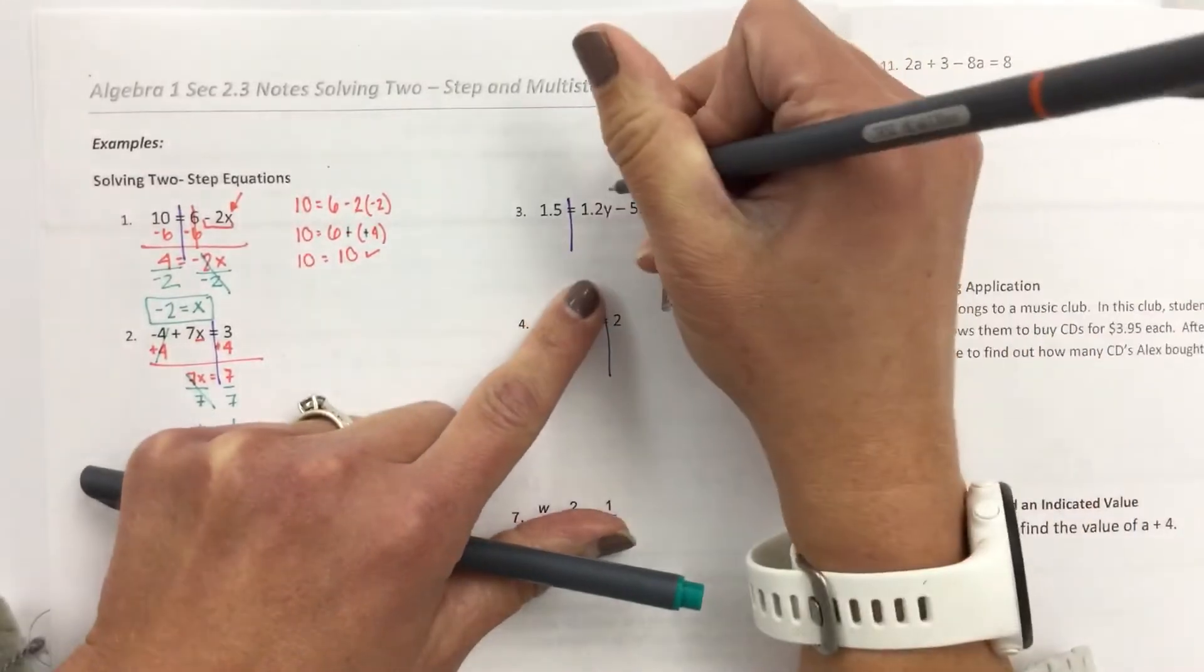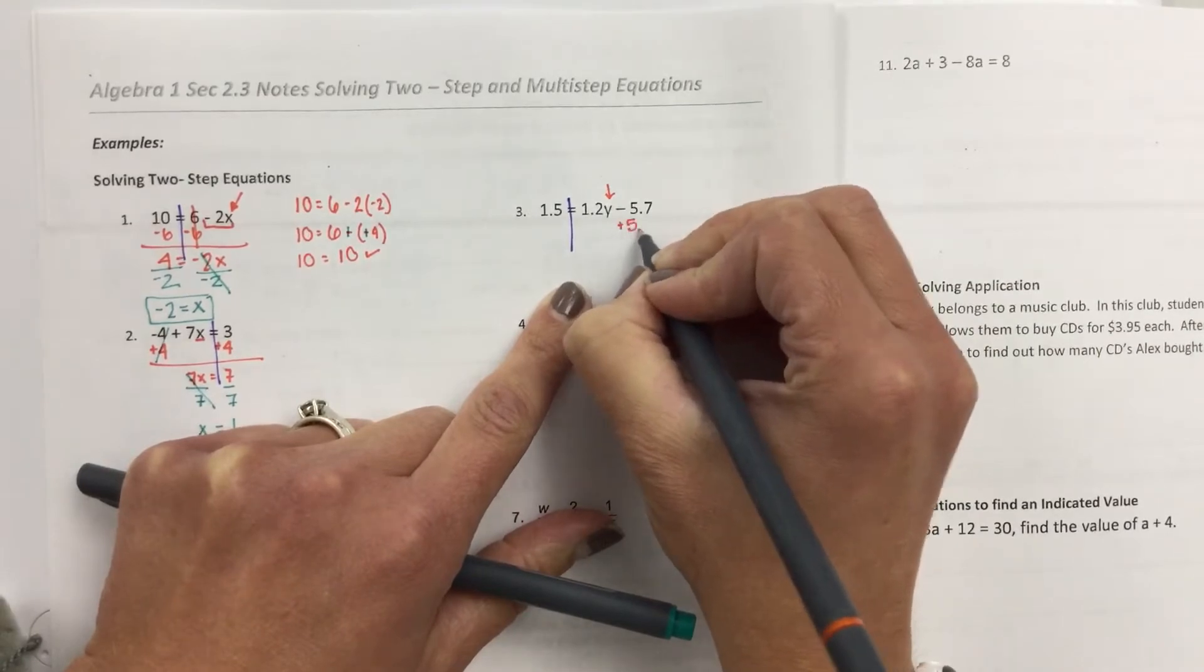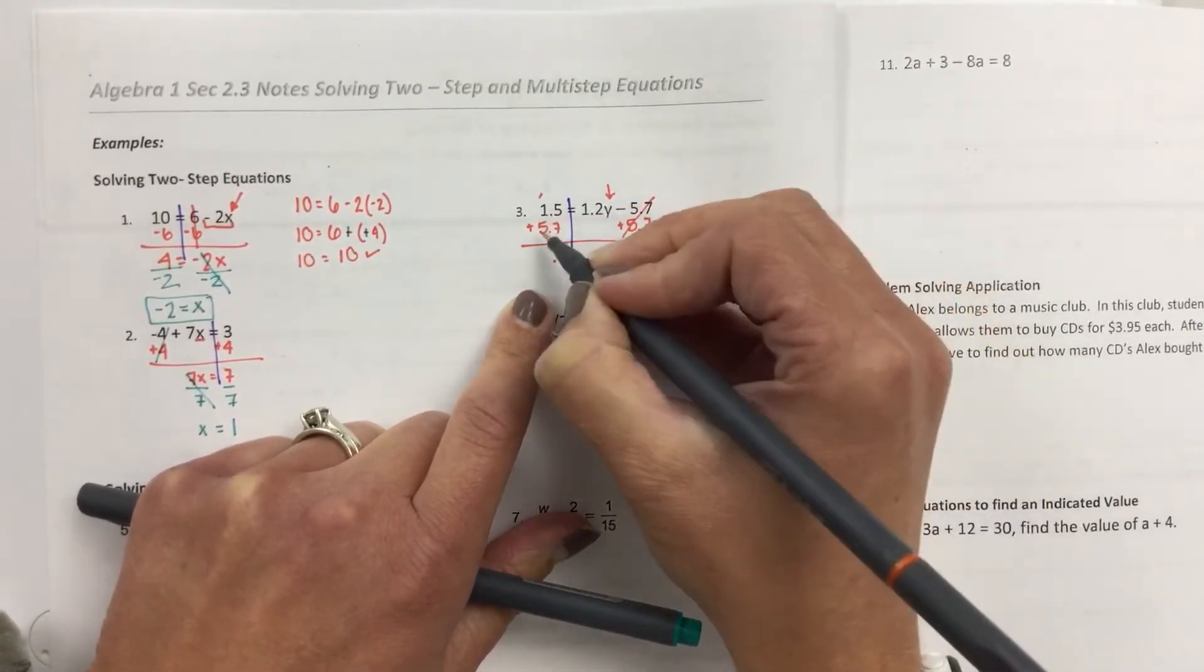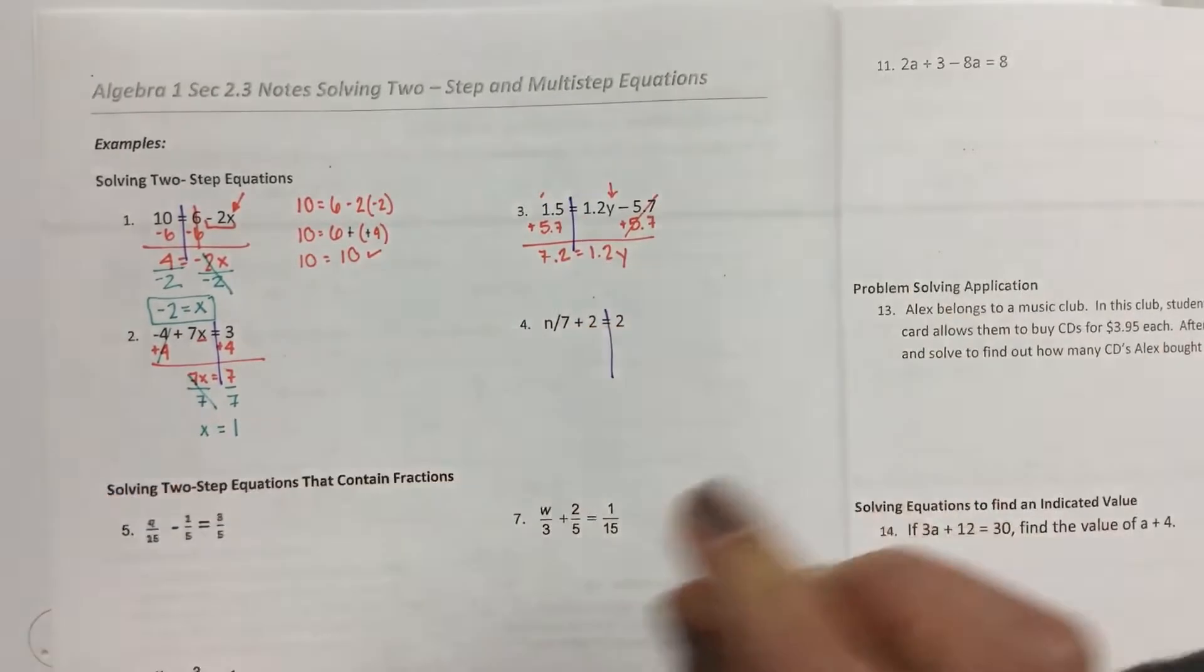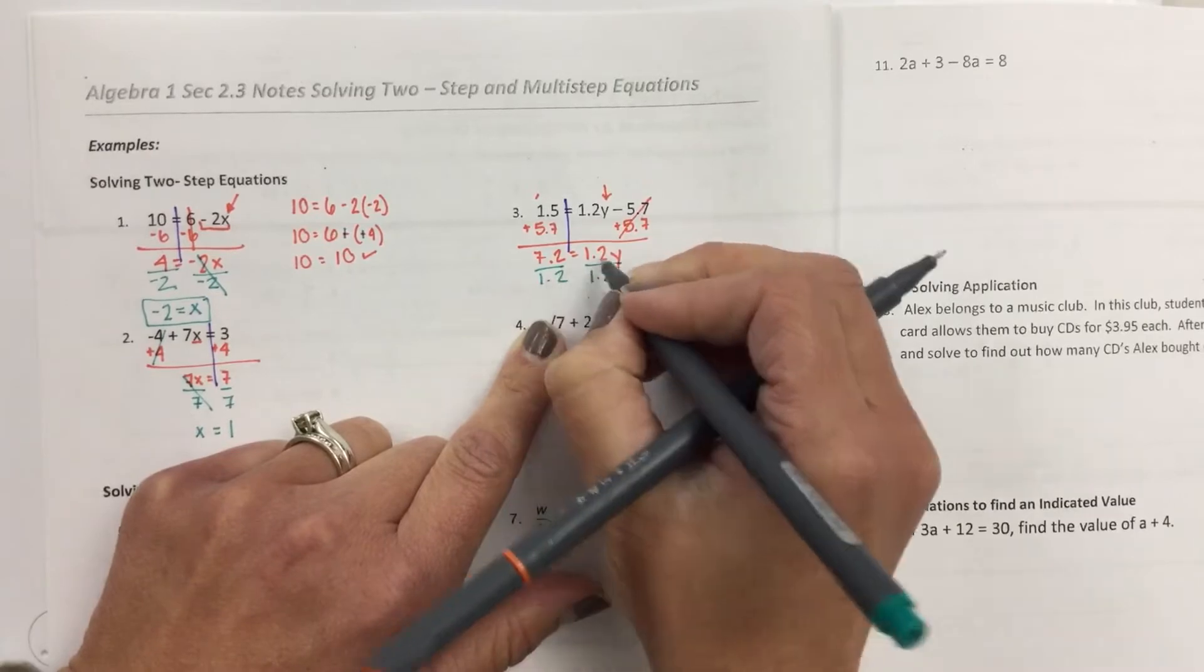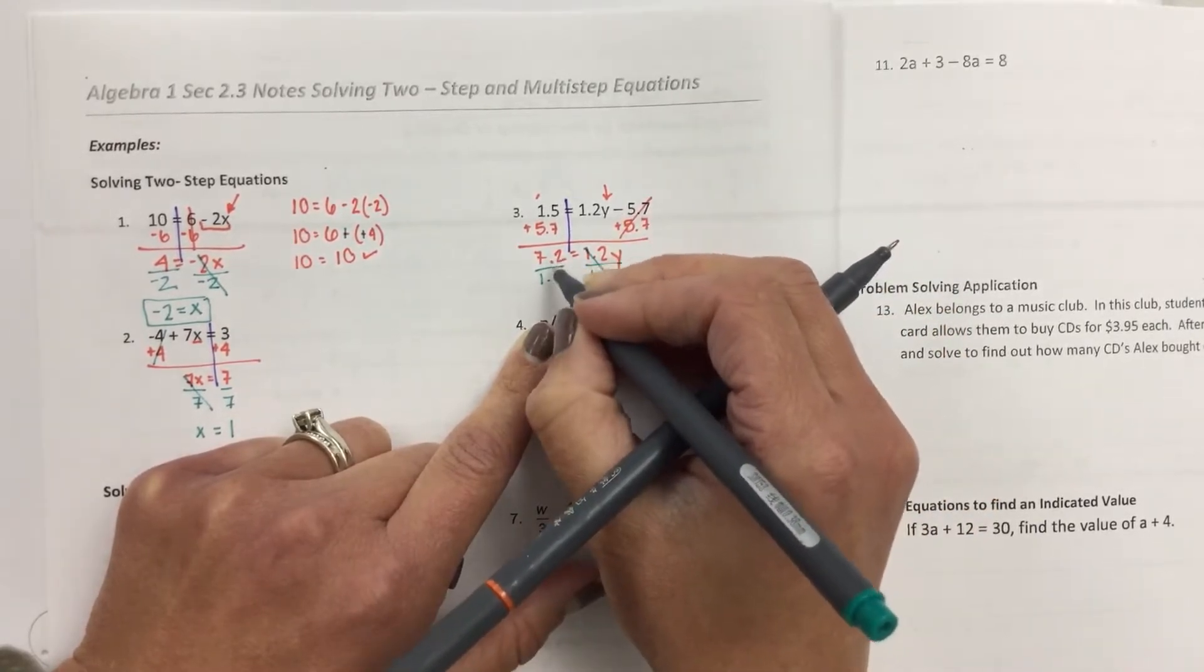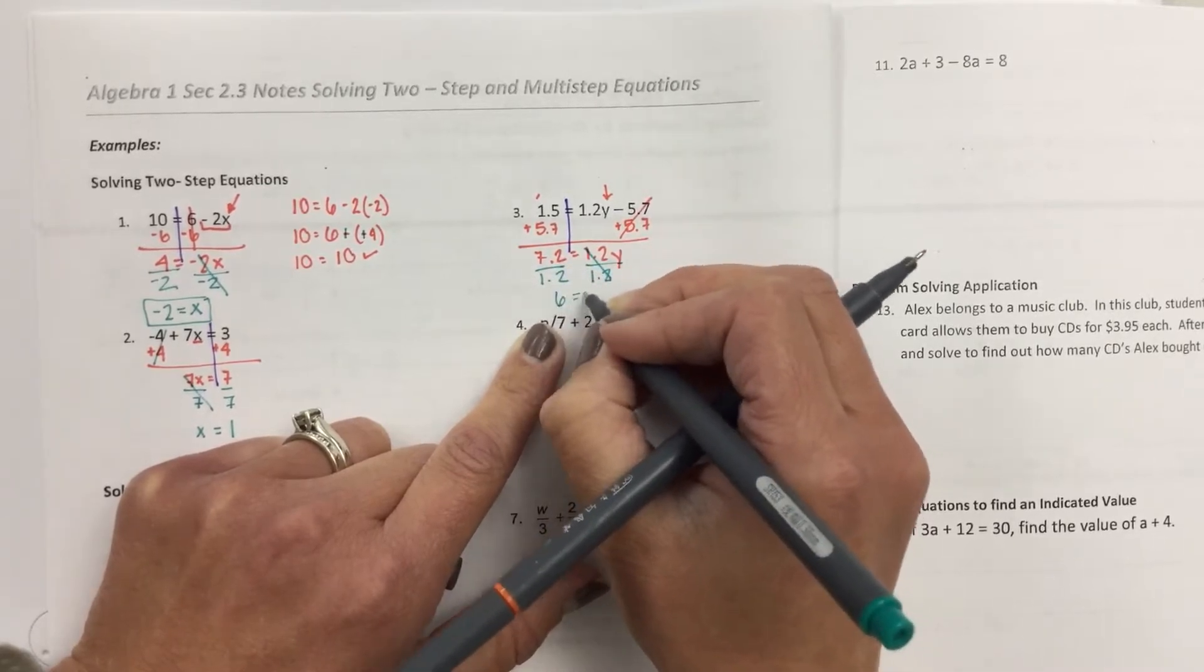Number 3. Locate your variable. You need to move the 1.2 and the 5.7. I would start by adding the 5.7. And then when I add this, 12. Make sure you line up your decimal points. 5, 6, 7. And to get y alone, you need to divide by that 1.2. And when you have decimals, you can think about just like 72 divided by 12. That works. So you would get, but then you have to think about the decimal as well. And so it actually fits in there 6 times. Your answer is 6.